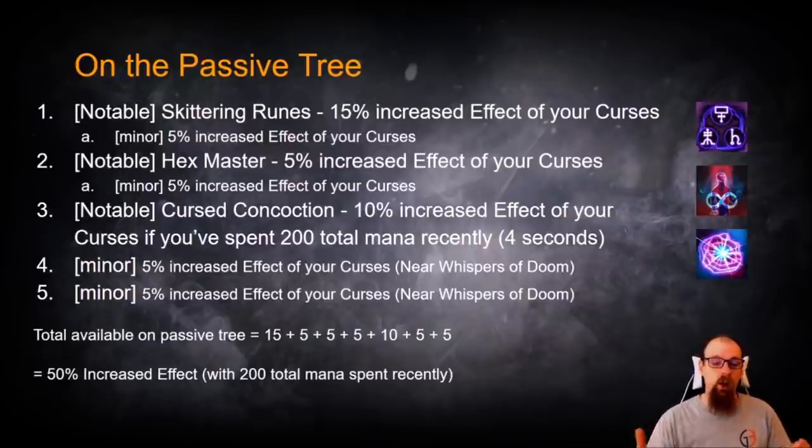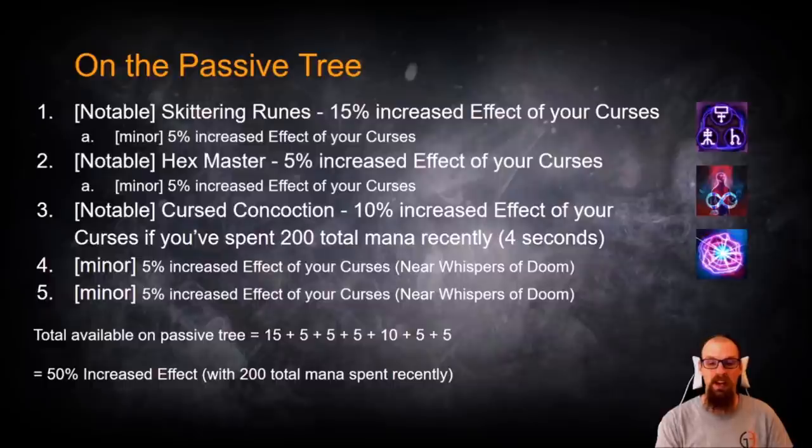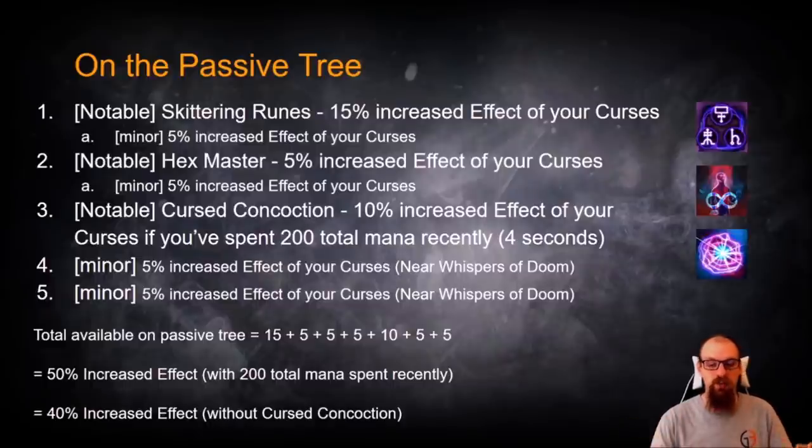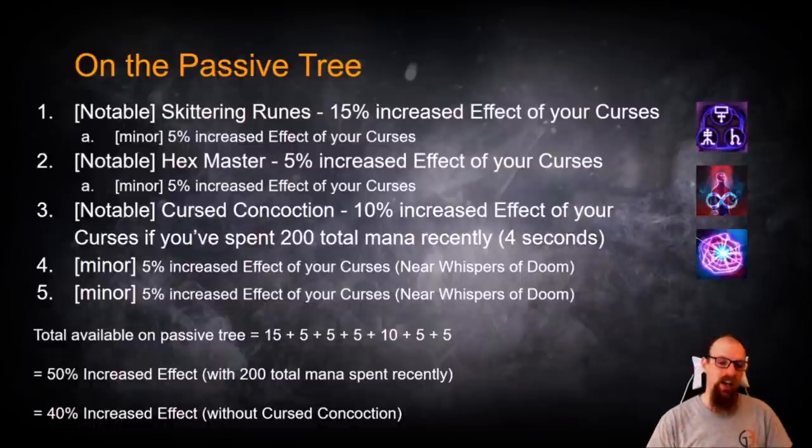That's the total available Minor and Major nodes that will give you increased effect of your curses on the regular passive tree. So when you add all of these up, you come to a grand total of 50% increased effect with 200 total mana spent recently, or 40% total increased curse effect without Cursed Concoction.